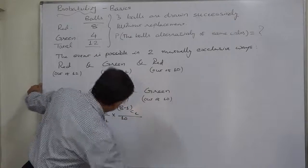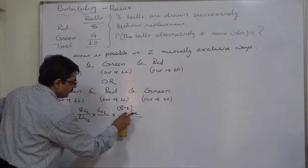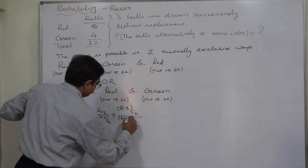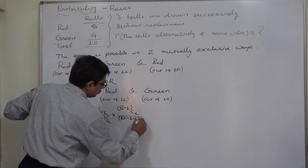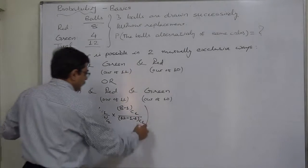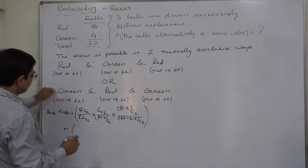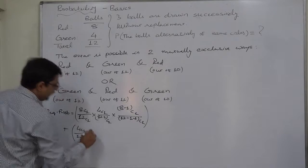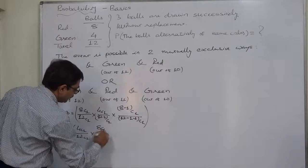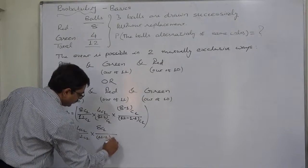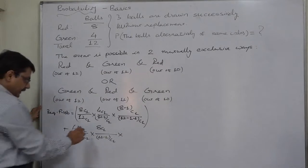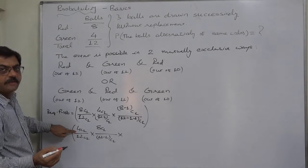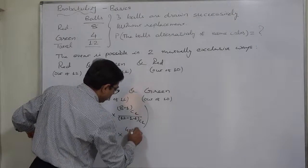For the second case — Green-Red-Green — it is 4C1 upon 12C1, multiplied by 8C1 upon 11C1, multiplied by 3C1 upon 10C1. The second green is drawn from 3 because we already drew one green ball which was not replaced, so it goes from 4 minus 1 = 3.